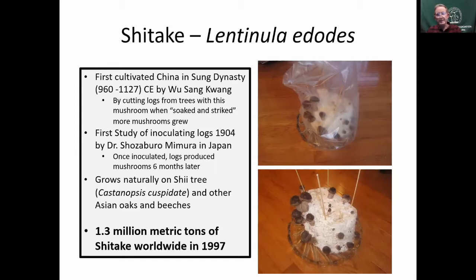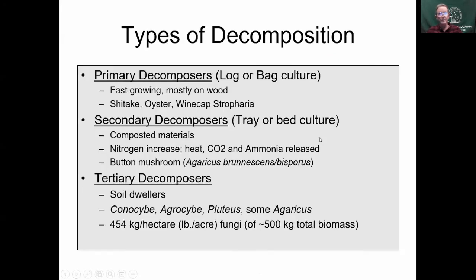By 1997 there were 1.3 million metric tons of shiitake produced. The grow-your-own shiitake kit — like one I gave my daughter as a birthday present — shows how far this has come. These kits are widely available now.